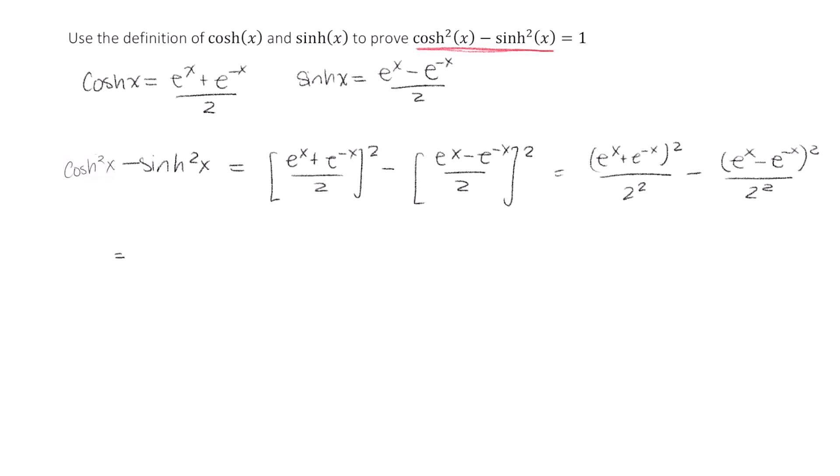Now clearly, 2 squared is just equal to 4. So in the next step, I'm going to just rewrite that as a 4.